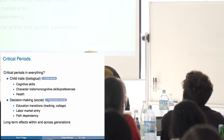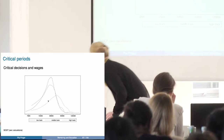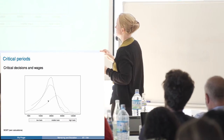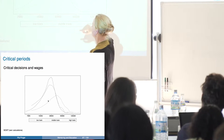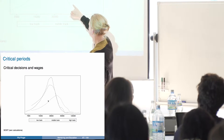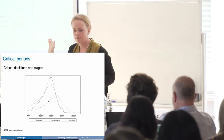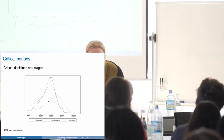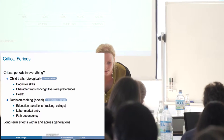This type of critical period depends very much on the social and institutional context and can be very different for different countries. For example, here is a picture of gross annual wages for individuals tracked onto the three different tracks in Germany: the highest track, the middle track, and the lowest track. This is not causal, but it illustrates that if you happen to do badly at important educational transitions, that can have very long-term effects in terms of labor market outcomes.